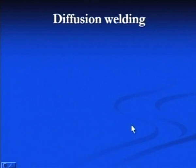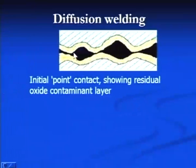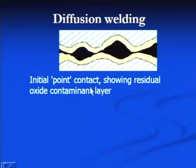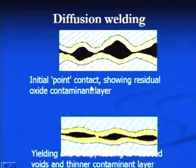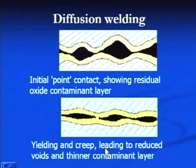Diffusion welding is another process in which the components to be joined are kept under pressure at high temperature. Initially there is point contact at the interface, and gradually when pressure and temperature are high, yielding and creep at the interface takes place, which increases the actual contact area and leads to reduced voids and a thinner contaminated layer.